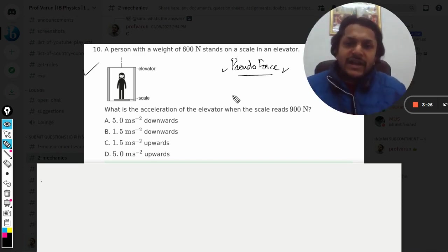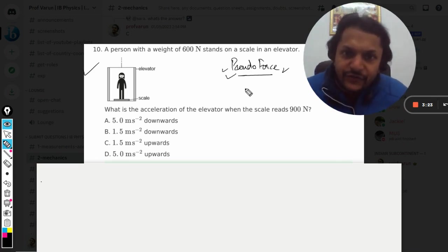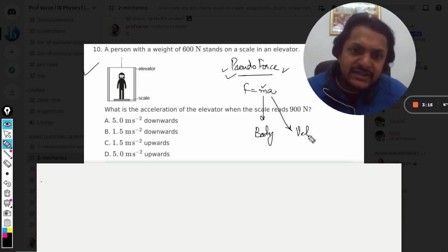Now what are the characteristics for this? First of all, F equals M into A. The M is the mass of the body, not the vehicle, and acceleration is the acceleration of the vehicle.